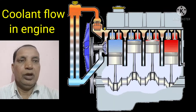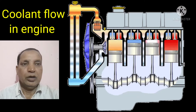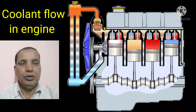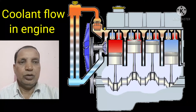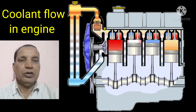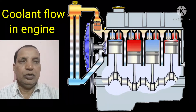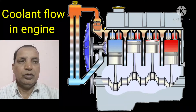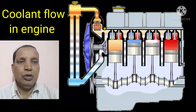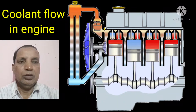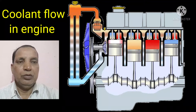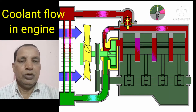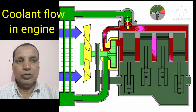Hi friends, today we discuss how coolant flows in the engine. In this animation video, this shows the position when the thermostat will be open — at that time coolant flows directly through the radiator. In another animation, I have also showed you when the thermostat is not open, what happens through the bypass. In this animation you can also see the temperature meter at the top of the engine.